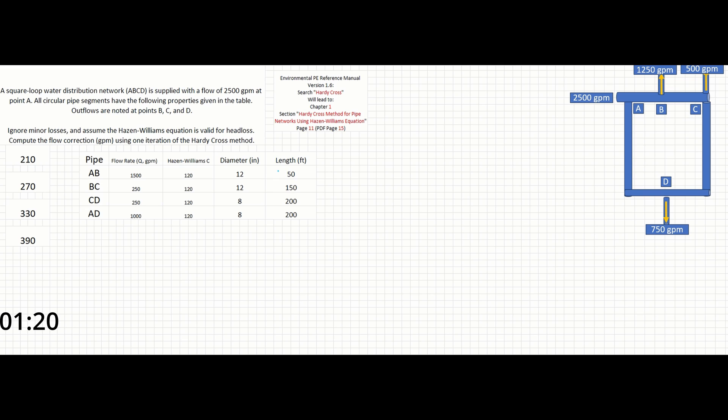The first thing we can do is search for the Hardy Cross method in our reference manual. The environmental reference manual will have this in chapter one. The Hardy Cross equation is given as delta q equals negative times the sum of the head loss over 1.85 times the sum of the head loss over the flow, and that term is to the absolute value. Delta q here is the flow correction. This shows us that there are two terms we're going to need to solve for: the head loss, and the head loss over the flow. The problem already tells us to ignore minor losses and assume the Hazen-Williams equation is valid for head loss.